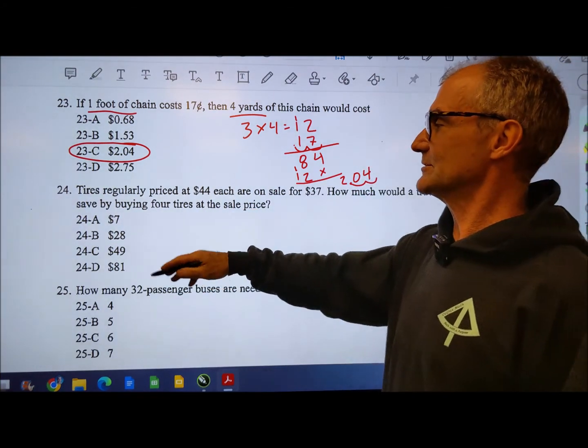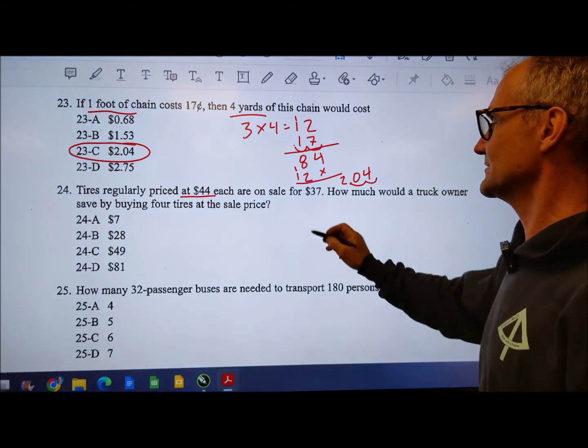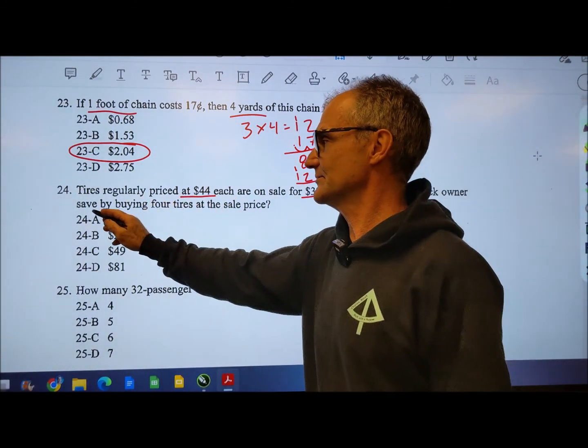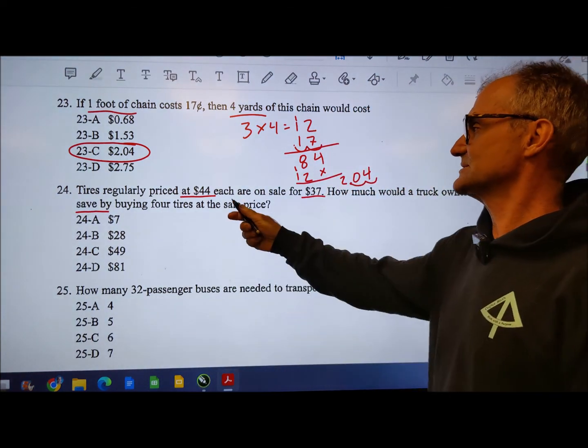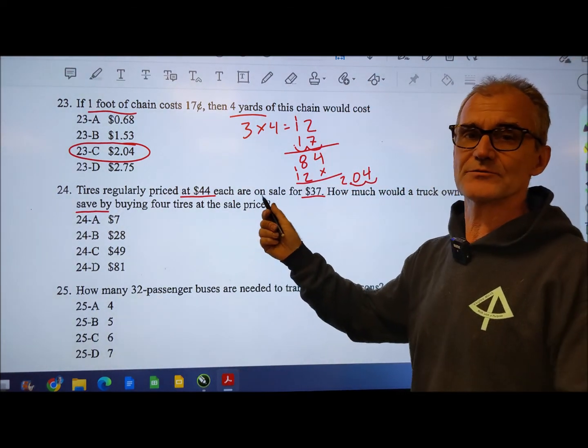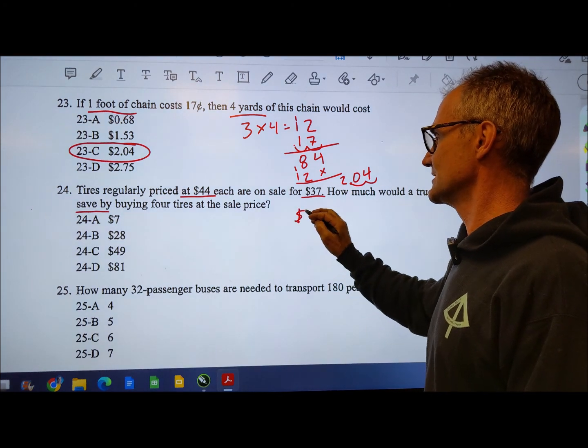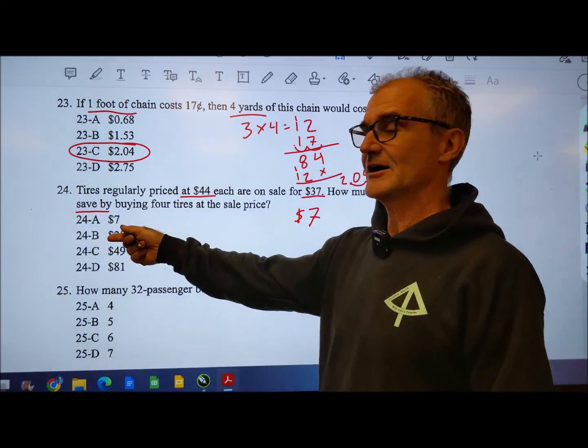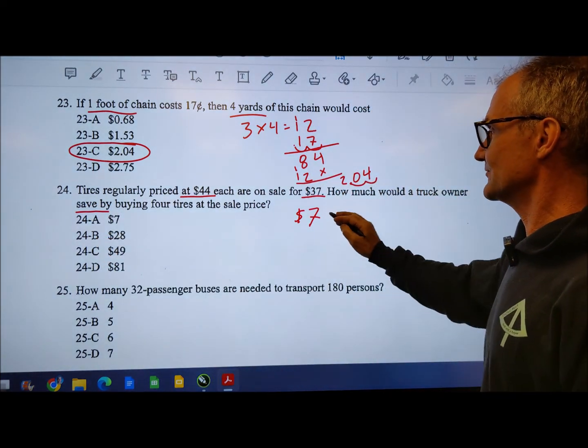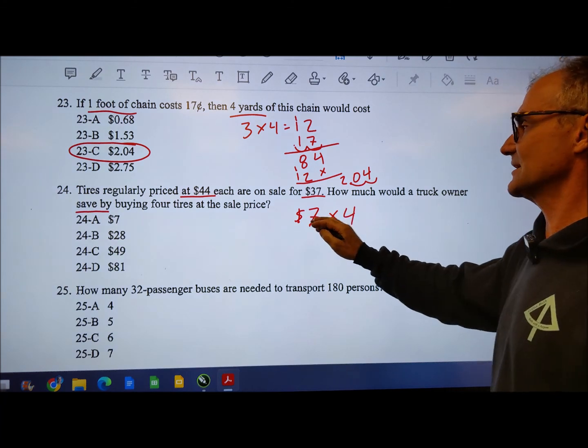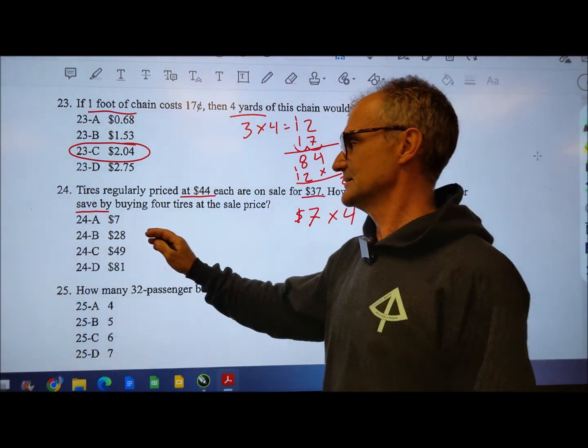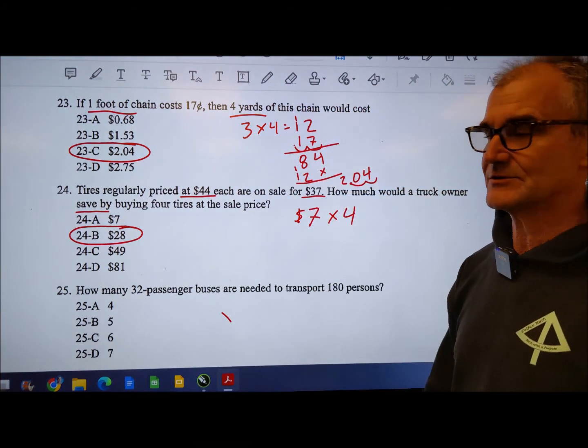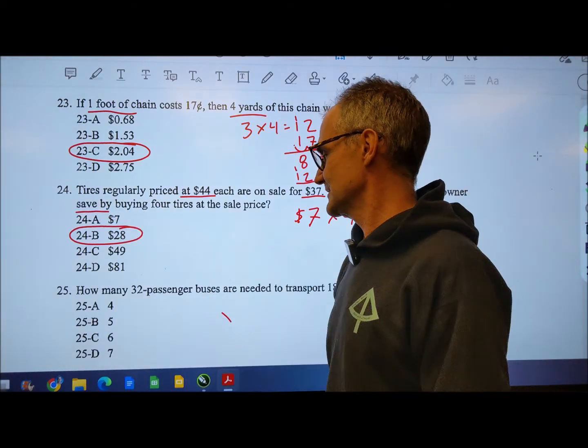Number 24, tires regularly priced $44 and they are on sale for $37. How much would a truck owner save by buying four tires? Well it's $7 per tire. 44 minus 37 is $7 per tire. He's asking you how much you're going to save. Automatic distractor right there. But you have four tires so you do $7 of savings times the four to get the correct answer 28. Could have done it other ways but that seems to be one of the quickest because you're looking for how much needs to be saved.